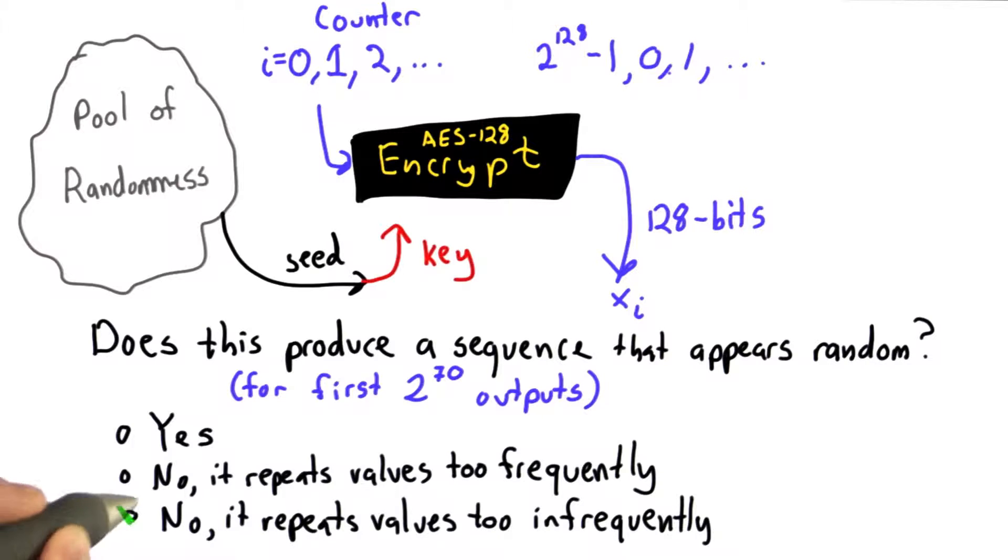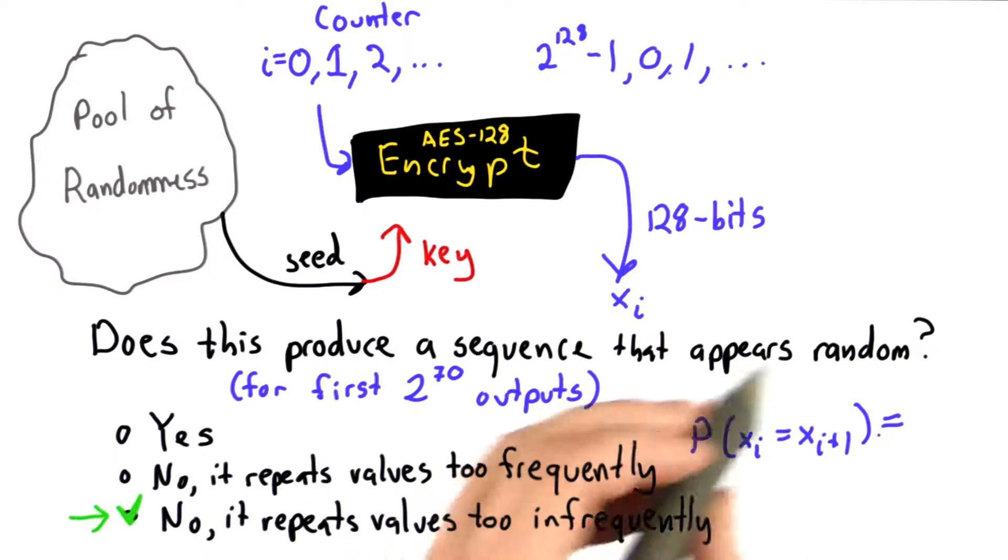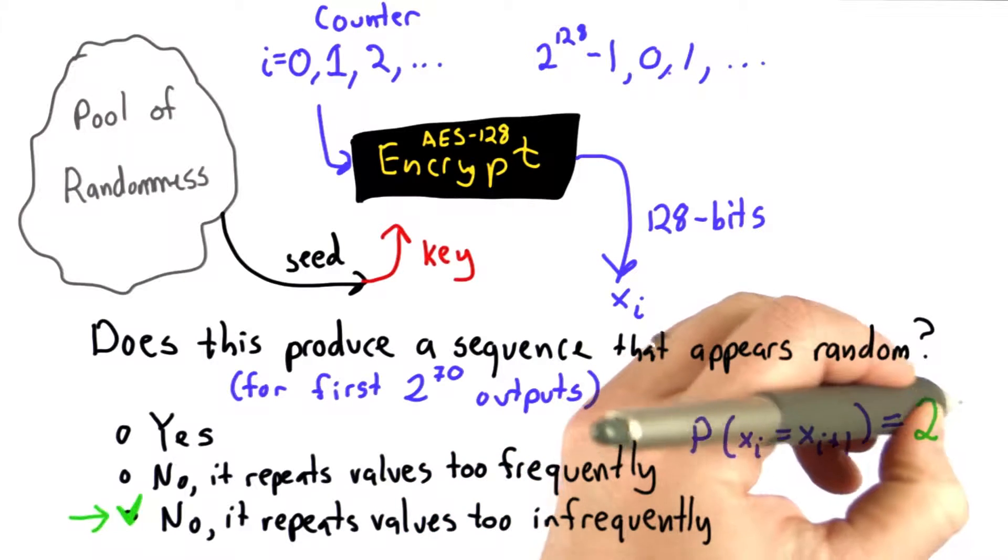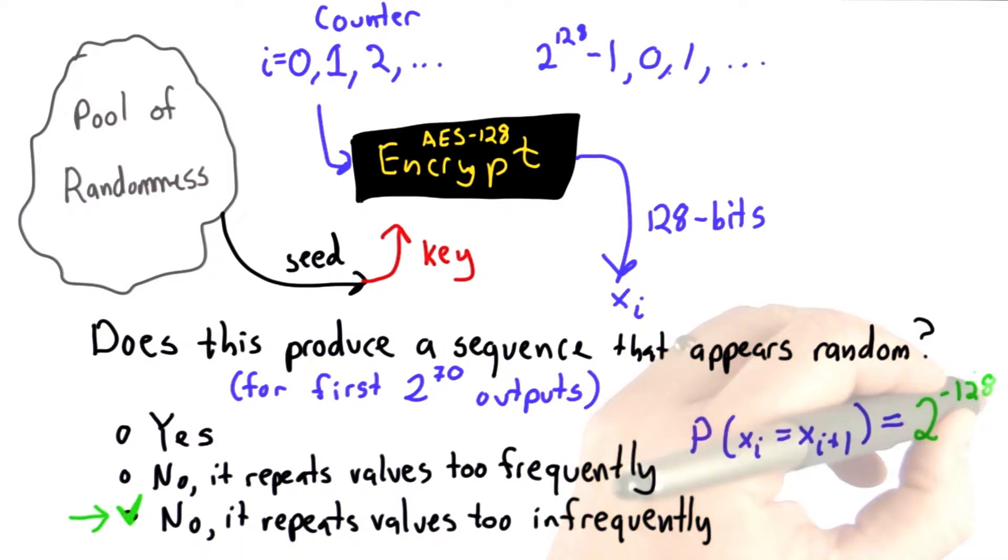If the answer is no, it repeats values too infrequently. This may seem a little surprising. If it was random, well, the probability of two consecutive values being equal should be 2 to the negative 128, a very low probability but not 0.